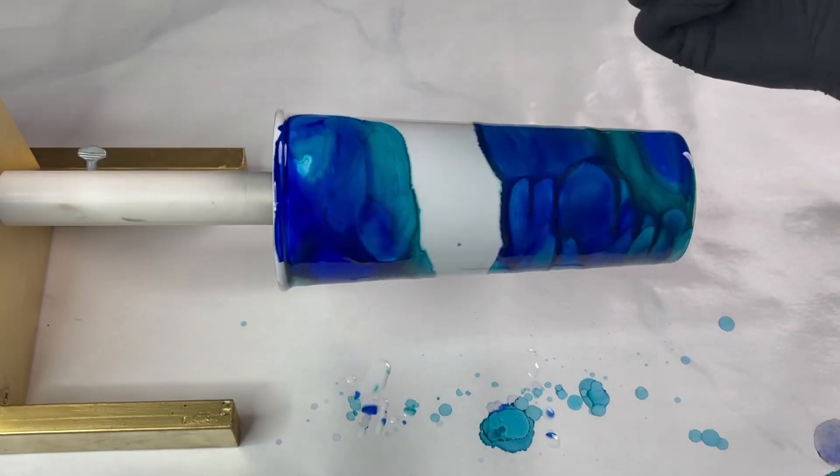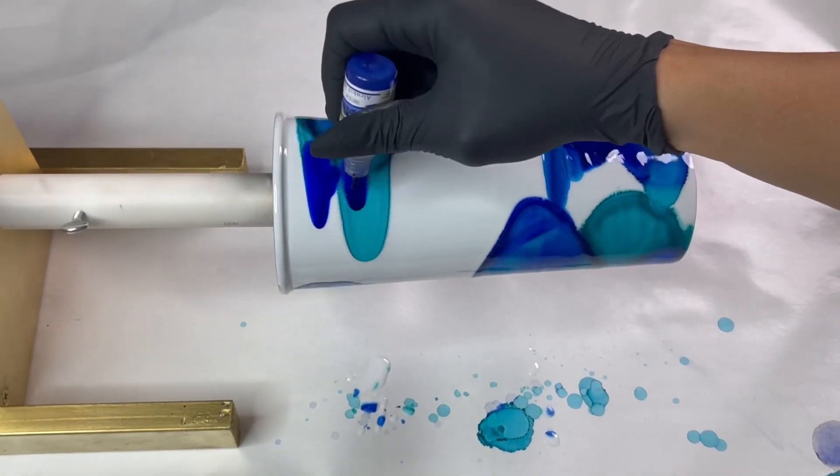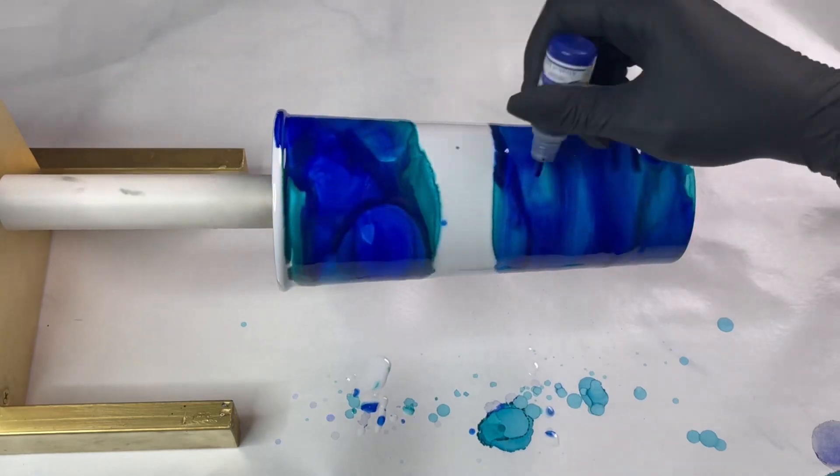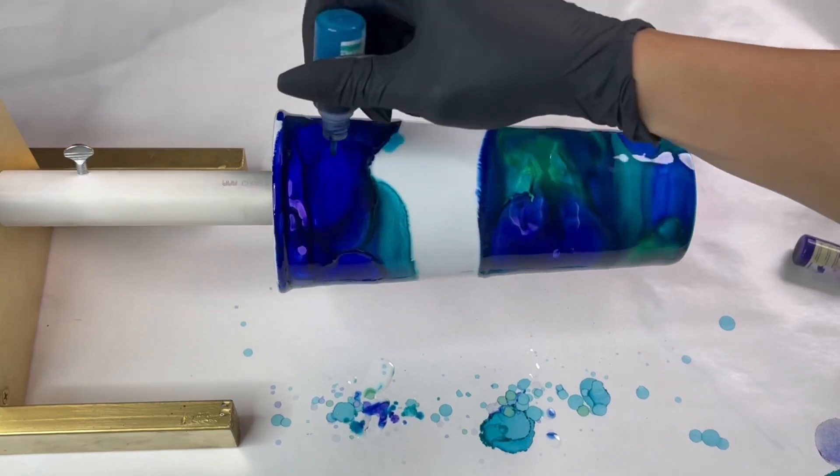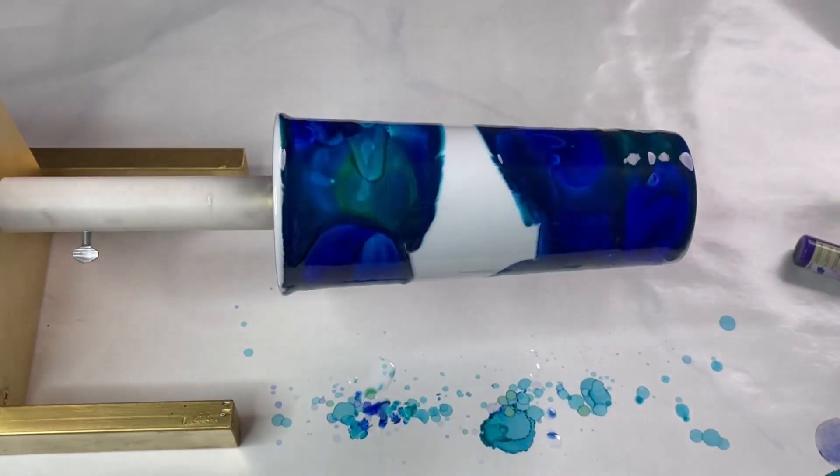And I kept a lot of the cup white. You can see that I'm specifically leaving some white because that's what I wanted, and just kind of going over with those couple of colors. There's like a green in there and two different colors of blue.